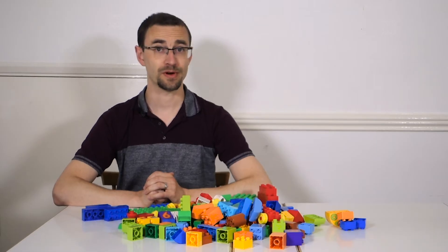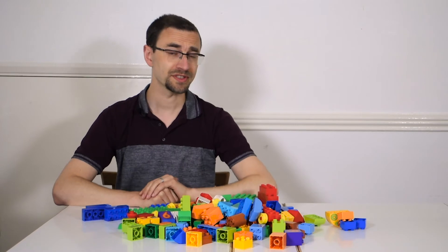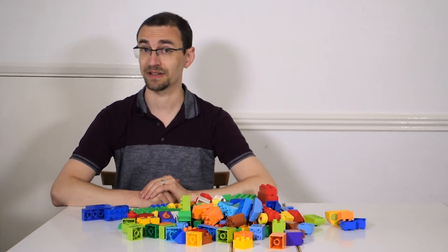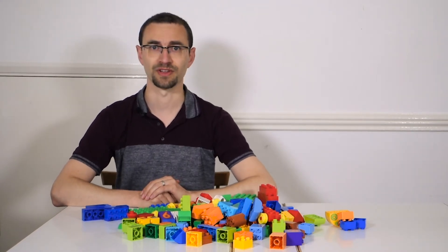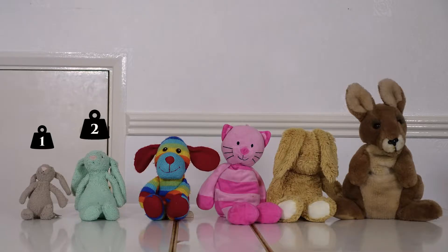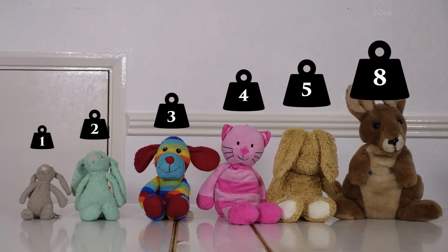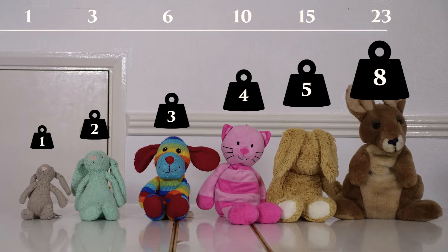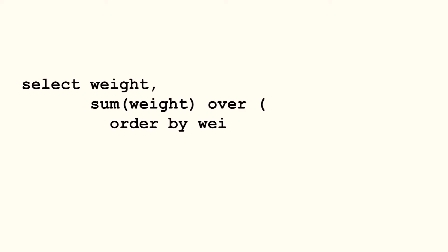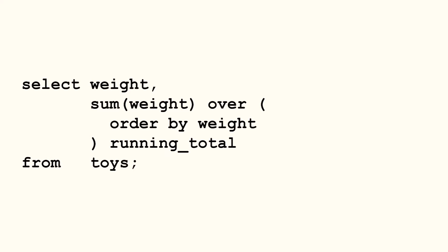This is already cool and powerful, but you can also use analytic functions to calculate running totals. Say you sorted your toys by weight from lightest to heaviest and you want to add the running total of the weight to your results. So for each toy, you need to add its weight to the total of all those lighter than it. To do this, sum the weight and add ORDER BY weight in the OVER clause.